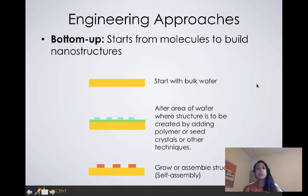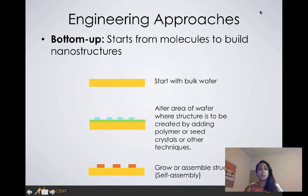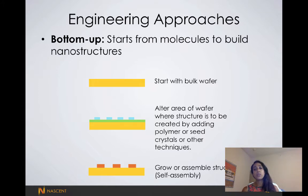In a bottom-up approach we're starting from our molecules and building up these nanostructures brick by brick. In this example schematic I've shown, we start off with our bulk wafer and then alter the area of the wafer using some chemical treatment. We then grow or assemble our desired structure.